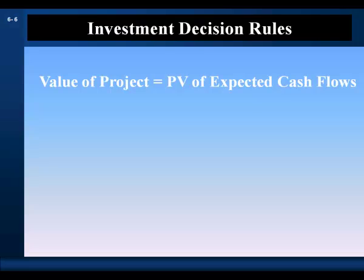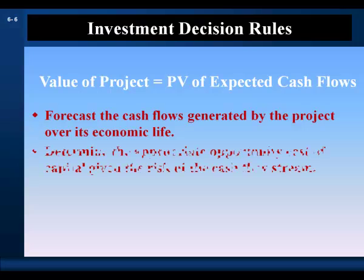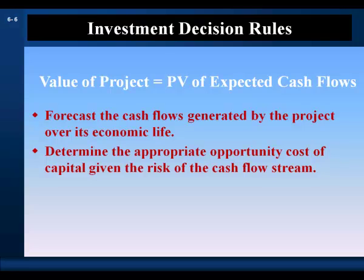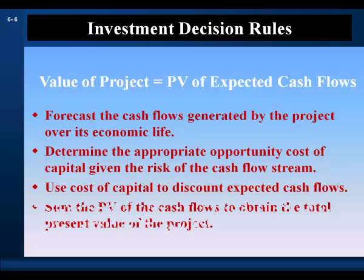In discounted cash flow valuation, the value of a capital project is equal to the present value of its expected cash flows. To determine the present value of a project, we forecast the cash flows generated by the project over its economic life. We determine the appropriate opportunity cost of capital given the risk of the cash flow stream, and use the cost of capital to discount the expected cash flows. We then sum the present values to obtain the total present value of the project.